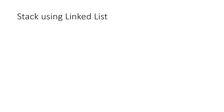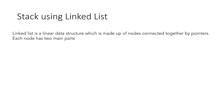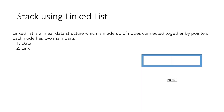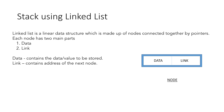I would recommend that you watch the series on linked list before moving forward with this tutorial. As we know, linked list is a linear data structure which is made up of nodes connected together by pointers, where each node has two main parts: the data part and the link part. The data part contains the value to be stored, and the link part contains the address of the next node.